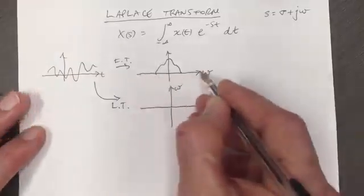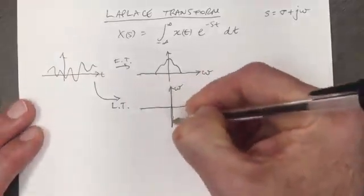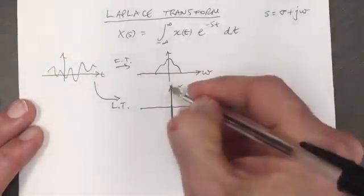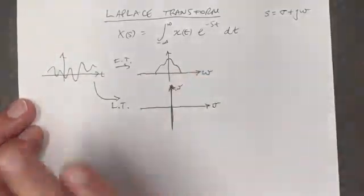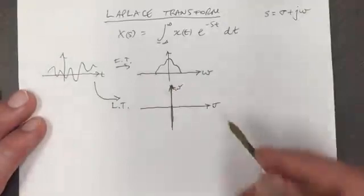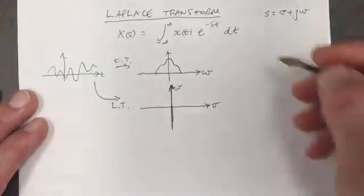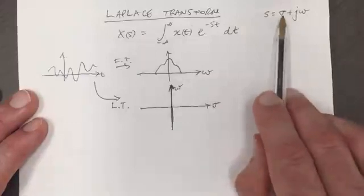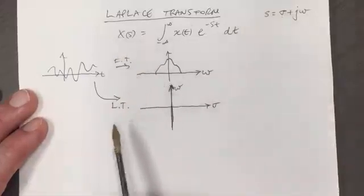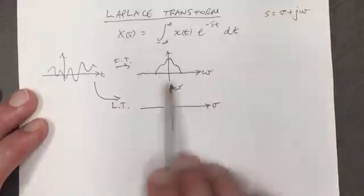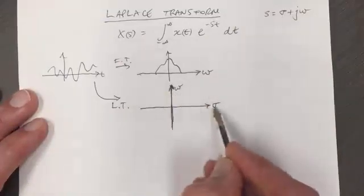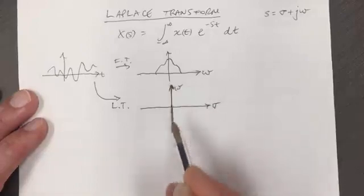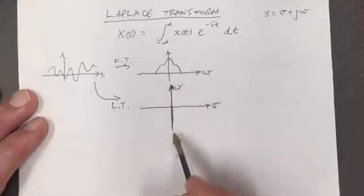Where we plotted omega horizontally here, we're now plotting omega on the vertical axis of our two-dimensional surface that our function is going to live on top of. So it's two-dimensional instead of one-dimensional. If we set s with sigma equal to zero, then we get the Fourier transform. So in this plane here, if we simply set sigma equal to zero and we look along the vertical axis and we look above that, that will be the Fourier transform.